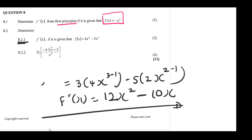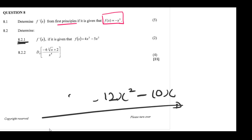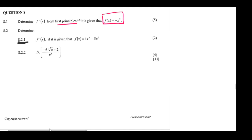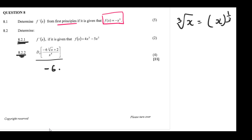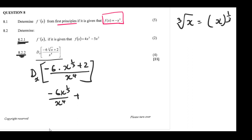Now for 8.2.2, we are asked to differentiate with respect to x. First, rewrite the cube root of x as x to the power of 1/3. So the expression becomes (5 - 6x^(1/3) + 2) all over x⁴. We separate this into two fractions: -6x^(1/3) over x⁴, plus 2 over x⁴.